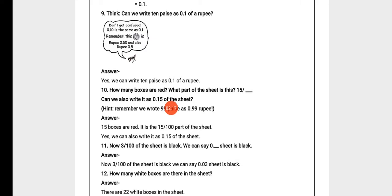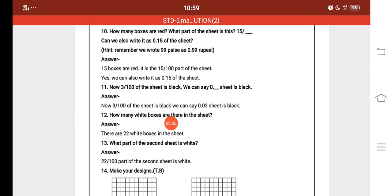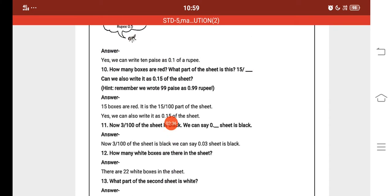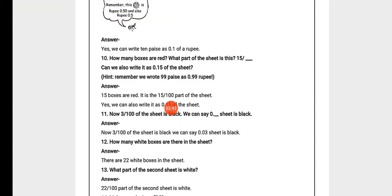Question 10: How many boxes are red? What part of the sheet is this? 15 upon dash. Total we have how many boxes — 100. We have 15 red boxes out of a total of 100. Can we also write it as 0.15 of the sheet? क्या हम इसे sheet का 0.15 लिख सकते हैं?